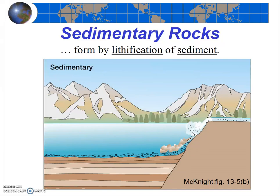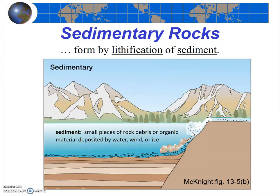Sedimentary rocks form from the lithification of sediment. So first, what is sediment? Basically, sediment is simply little pieces of mineral material and organic material. Igneous rocks were made out of crystals. Sedimentary rocks are made out of pieces of stuff — more precisely, pieces of sediment.